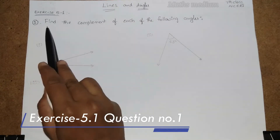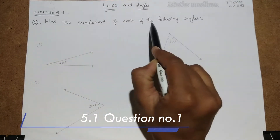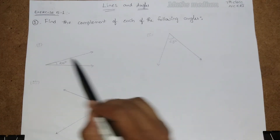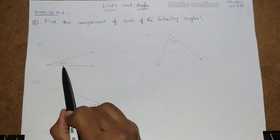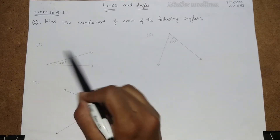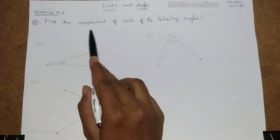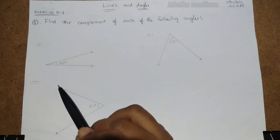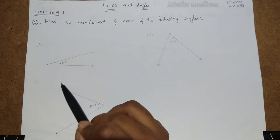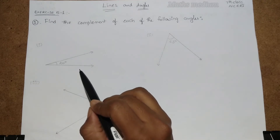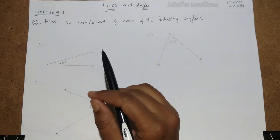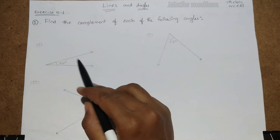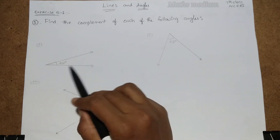Question number 1: Find the complement of each of the following angles. Here are the figures of the angles given. We have to find the complement of each angle. In previous videos I already explained about the angles and lines introduction and about the related angles. Check the description box for the link, and coming to here we have to find the complement of each angle.